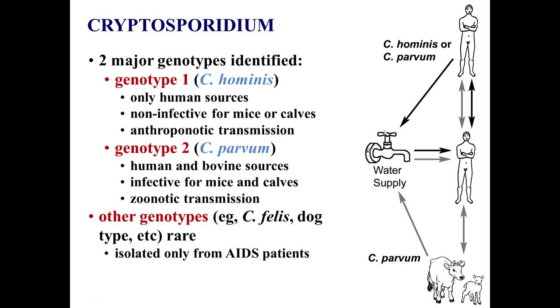Cryptosporidium has 2 major genotypes: genotype 1, C. hominis, and genotype 2, C. parvum. Genotype 1 C. hominis has only human sources and is non-infective for mice or calves, so there is only anthroponotic transmission — from man to man. Genotype 2, C. parvum, has human and bovine sources, is infective for mice and calves, and there is zoonotic transmission from animals to humans. Other rare genotypes such as C. felis and dog type can occasionally be isolated from AIDS patients.